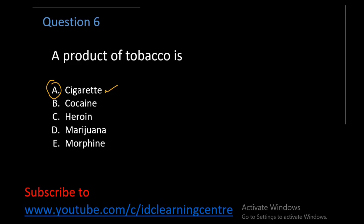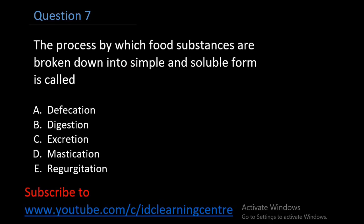Question 7: The process by which food substances are broken down into simple, soluble form is called A. Defecation, B. Digestion, C. Excretion, D. Mastication, E. Peristaltic movement. The right answer is Digestion. The question just explained the meaning of Digestion. Digestion is simply a process by which food substances are broken down into simple, soluble form.